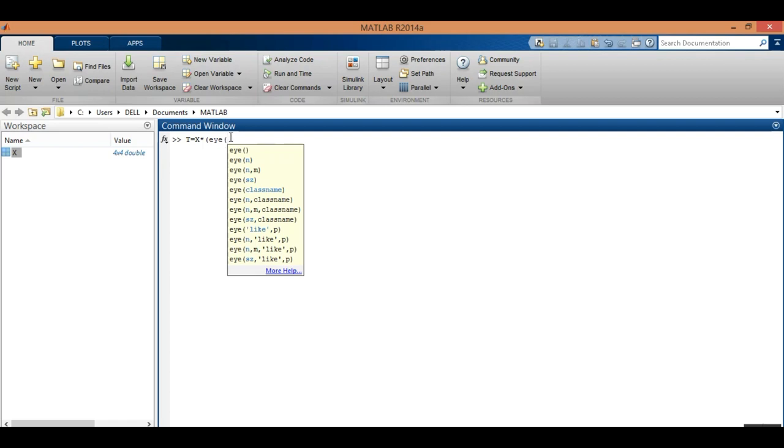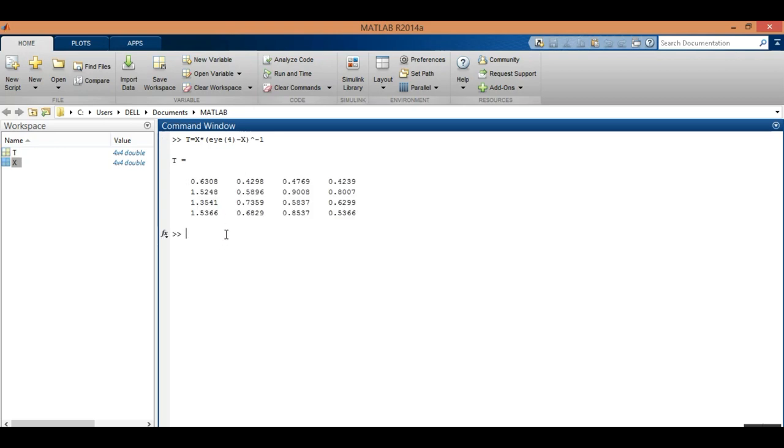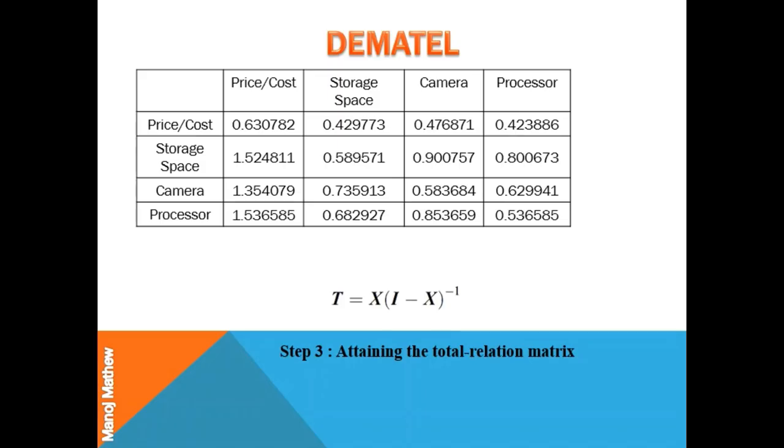This is the command for finding out the identity matrix in which we also need to provide the size of the matrix. Here you can see that the size of x is 4 cross 4. So we have to provide a value for identity matrix or the size of the identity matrix which will be 4 cross 4. Now, this is the total relationship matrix. This is the total relation matrix T which provides the information on how one factor or criteria affects another.